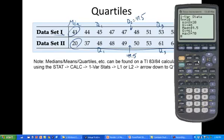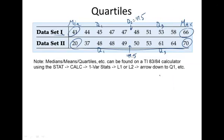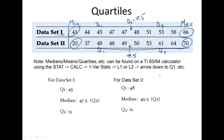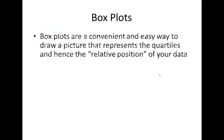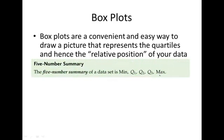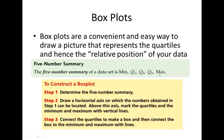So once again, the information that we just got for both data sets. To get the box plot, we have to plot that five-number summary on the number line. So first of all, you have to determine the five-number summary. We've done that already. Then we're going to draw the horizontal axis on which the numbers obtained can be located. Above the axis, mark the quartiles, and the minimum and maximum with vertical lines.